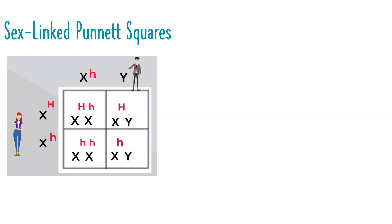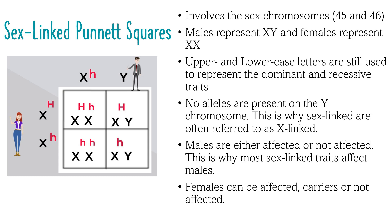Sex-linked or X-linked Punnett squares involve the X chromosome. Males are represented as XY and females as XX. When constructing X-linked Punnett squares we must use X's and Y's. Alleles are represented as superscripts and the upper and lowercase letters still apply. For X-linked Punnett squares, males can either be affected or unaffected. However, females can be affected, carriers, or unaffected. If a female is a carrier, she will not phenotypically express the trait but will carry the allele.